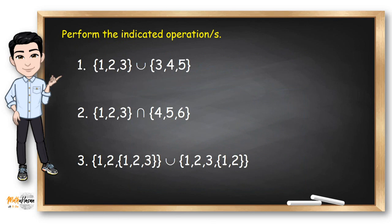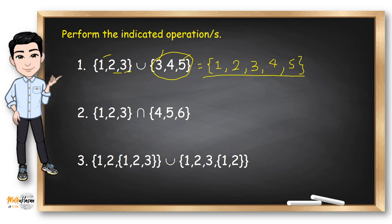Let's try these examples. In number 1, we need to get the union of two sets. In Union, all you need to do is combine all the elements. So I'll write 1, 2, 3, then get the remaining elements from the second set. Since 3 was already written, the next element is 4, and the last is 5. This is now the union of the two sets in number 1.